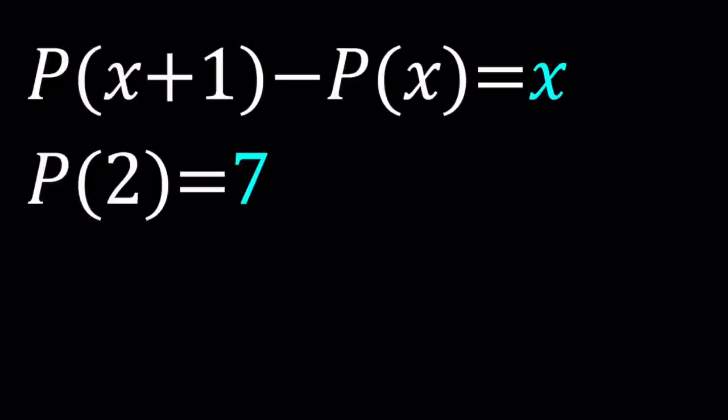if you have a constant polynomial then P of X is going to be a constant like C or 1, 2, negative 5, whatever. If P of X is linear then it's going to be like X plus 3. If it's quadratic, it's going to be 2X squared minus 7X plus 5. And if it's cubic, it's going to have X cubed, so on and so forth.